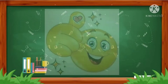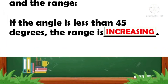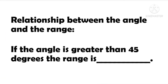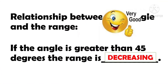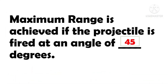Next! The relationship between the angle and the range. If the angle is less than 45 degrees, the range is increasing. If the angle is greater than 45 degrees, the range is decreasing. Very good! And last, the maximum range is achieved if the projectile is fired at an angle of 45 degrees. Awesome!